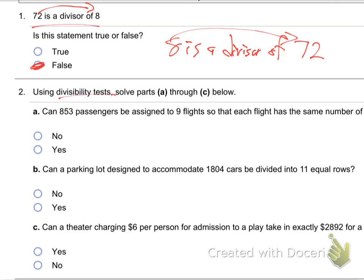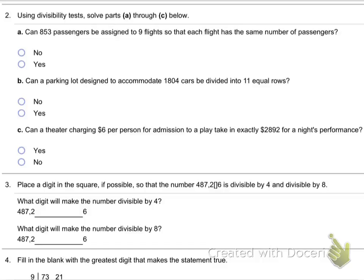Number two. Using divisibility tests, solve parts A through C below. Can 853 passengers be assigned to 9 flights so that each flight has the same number of passengers? Can 853 be divided by 9 evenly? If you have 853 passengers, can you put them on 9 flights so that every flight has the same number? Can you break it up evenly?